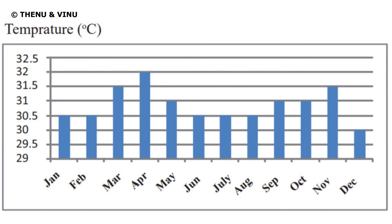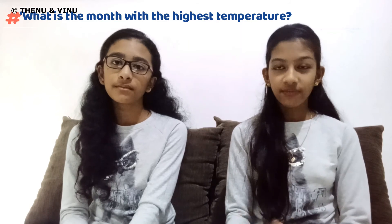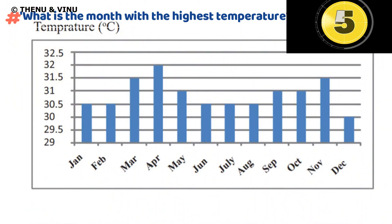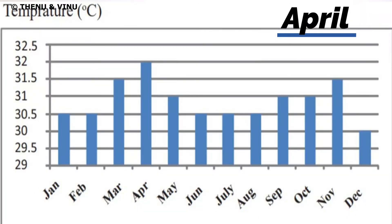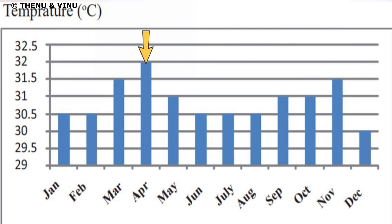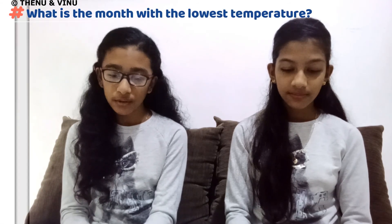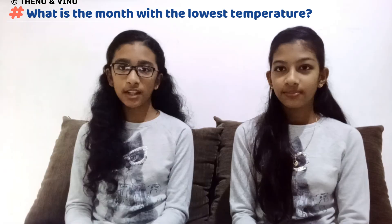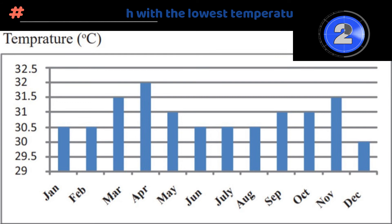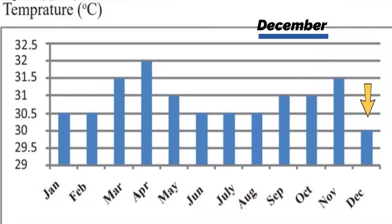Here you can see another graph about temperature. The first question is: what is the month with the highest temperature? The answer is April — in the graph you can see the line has gone up the highest at April. The next question is: what is the month with the lowest temperature? The answer is December, because in the graph the line for December has only gone up to 30 degrees Celsius.